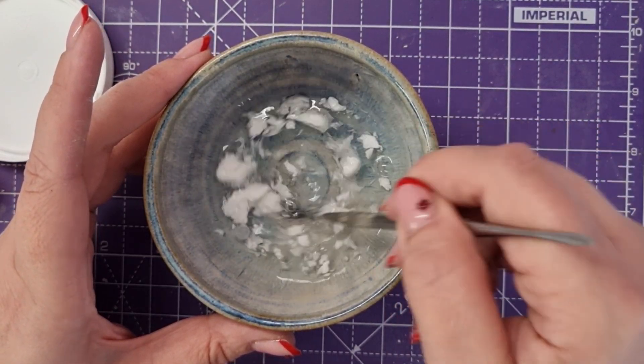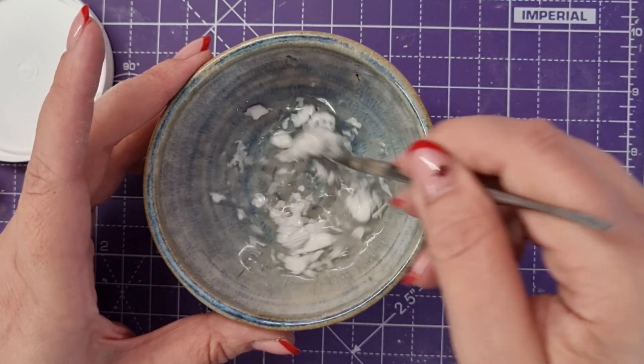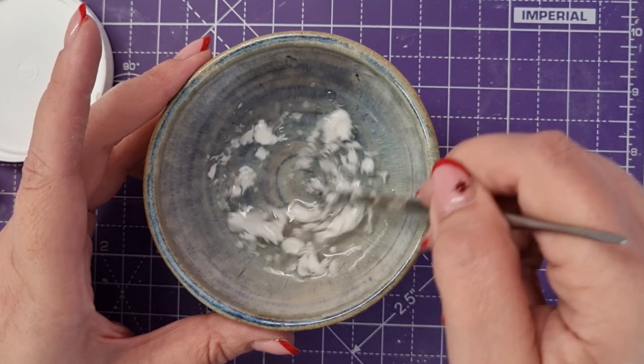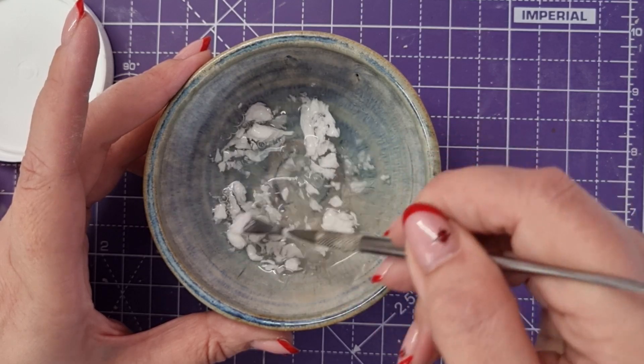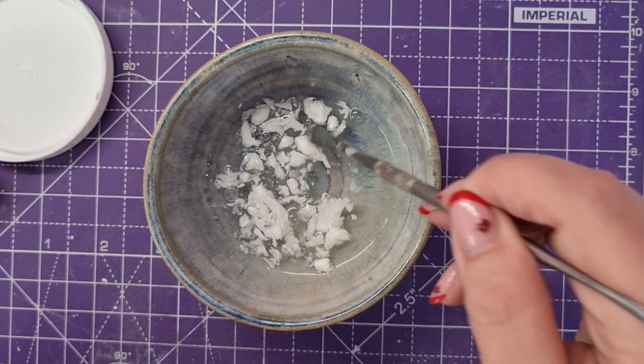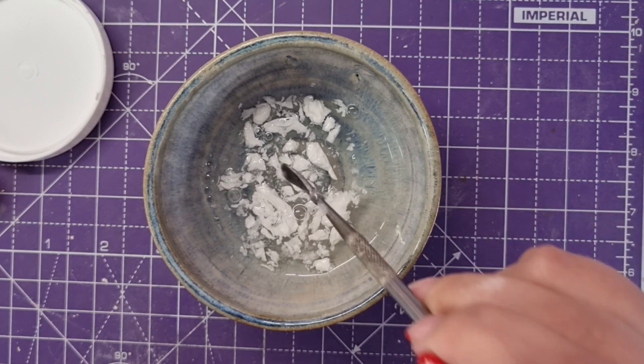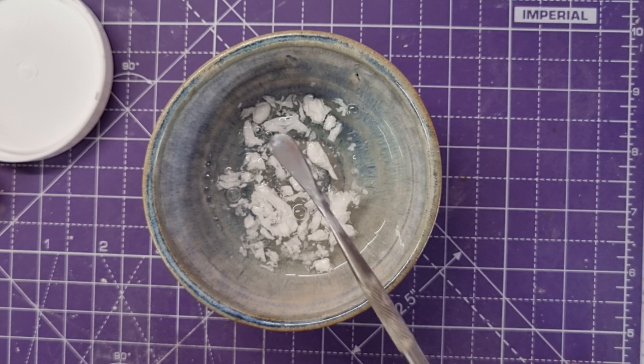The thing is that it gets lumpy and it gets a little bit weird looking, and that's okay because eventually the methylcellulose will absorb the water and it will come out completely clear.